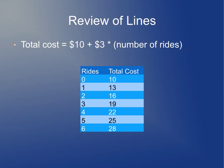If you were to make a table showing the total cost versus the number of rides: if you don't go on any rides, it costs $10; if you go on one, it's $13; if you go on two, it's $16; and so on.